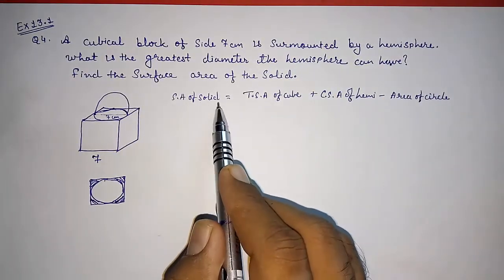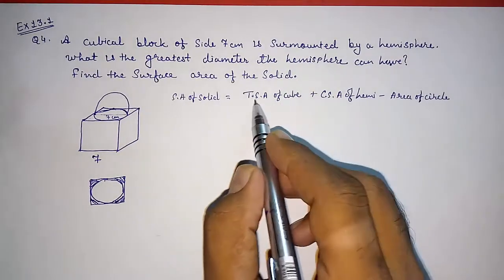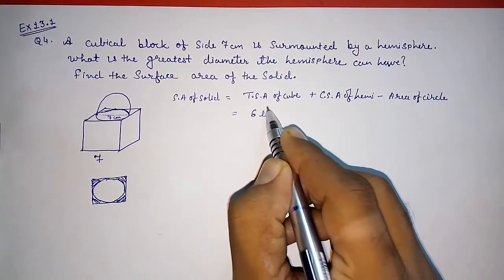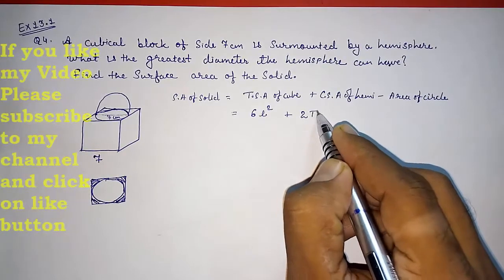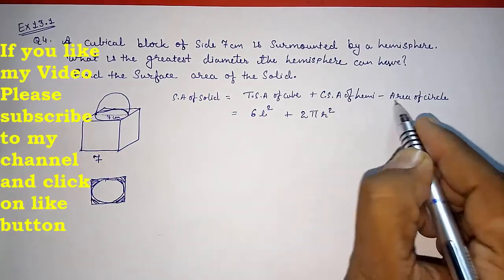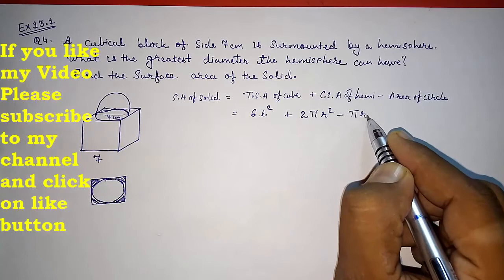So surface area of solid equals TSA of cube, that is 6L², plus CSA of hemisphere, that is 2πR², minus area of circle, that is πR².